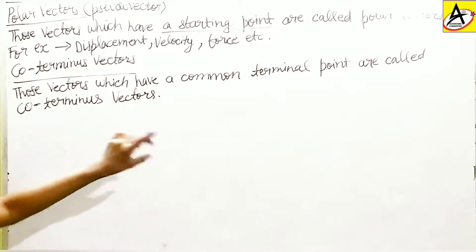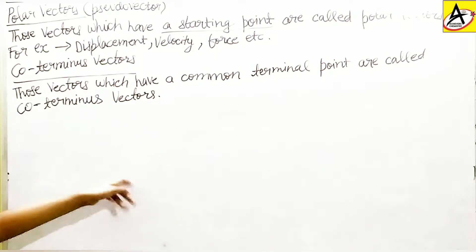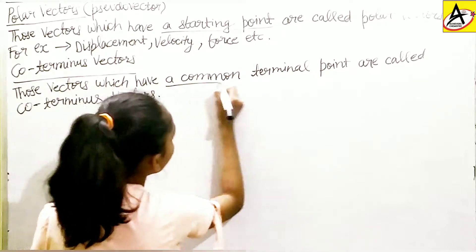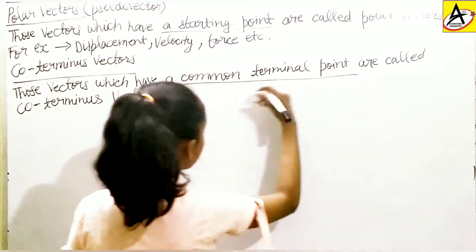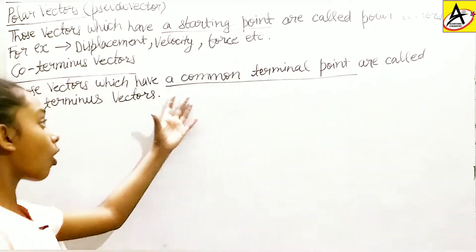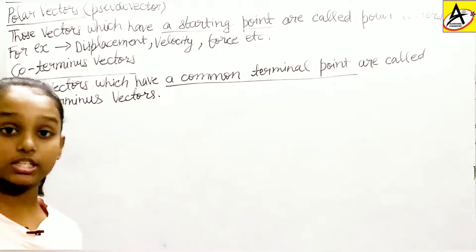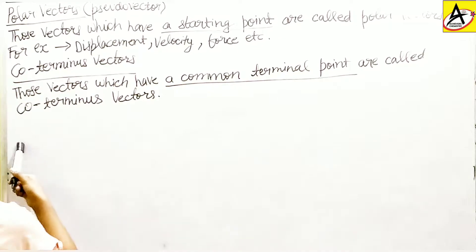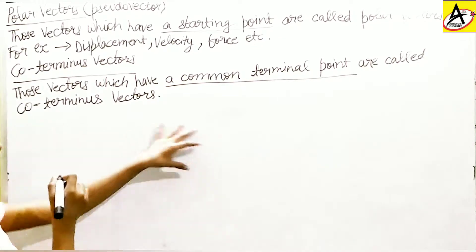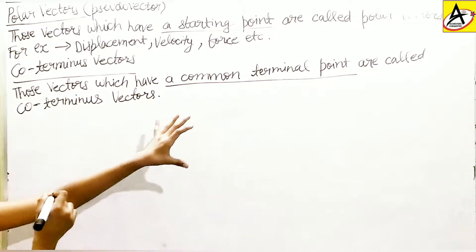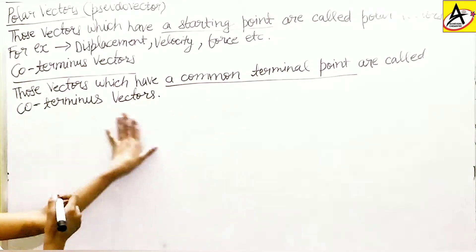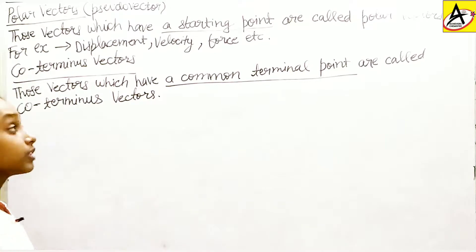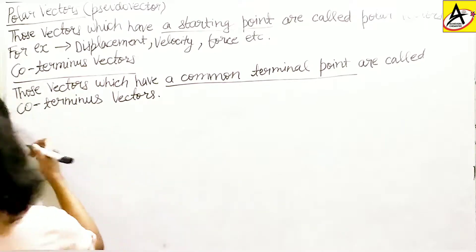Those vectors which have a common terminal point — here it is talking about a common terminal point — they are called coterminous vectors. Let's take an example.